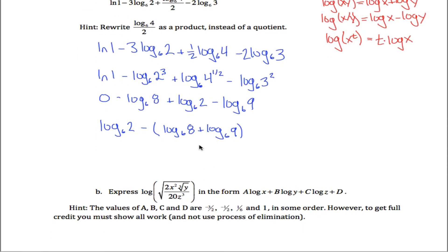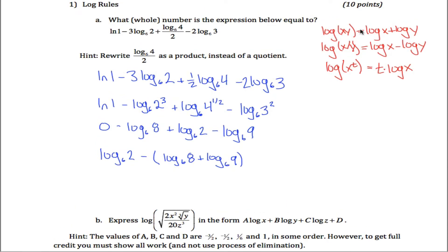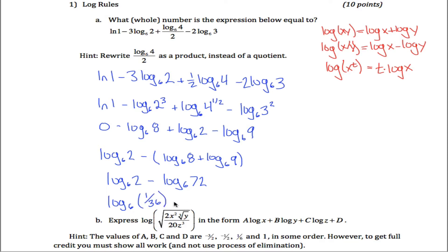The log base six of eight plus the log base six of nine, according to the first log rule, can be rewritten as log base six of 72 (nine times eight). Then log base six of two minus log base six of 72, by the second log rule, is log base six of two divided by 72, which reduces to one thirty-sixth. Log base six of one thirty-sixth asks: to what power do you raise six to get one thirty-sixth? Raising six to the negative two power gives thirty-six in the denominator, so the answer is negative two.